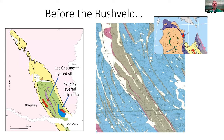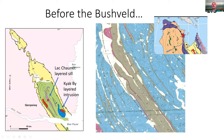Before I went to the Bushveld, I did quite a bit of fieldwork in northern Quebec in the Labrador trough and the Cape Smith fold belt. These are Paleoproterozoic fold and thrust belts that were intruded by a large amount of plume-related magmas.